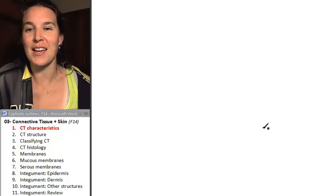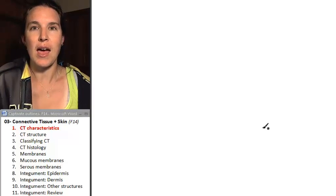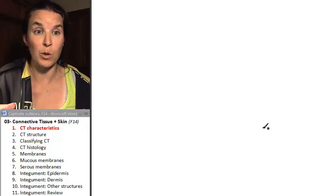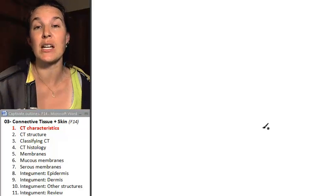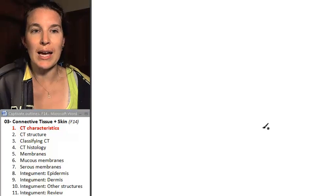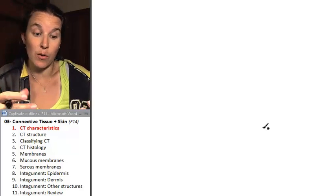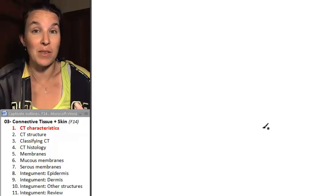So today's topic is connective tissue. And not only are we going to look at the characteristics of connective tissue, and we're going to look at different types of connective tissue in lab, but we're also going to look at membranes which are compound structures built out of connective tissue and epithelial tissue.